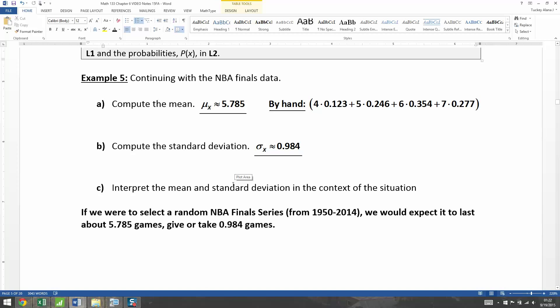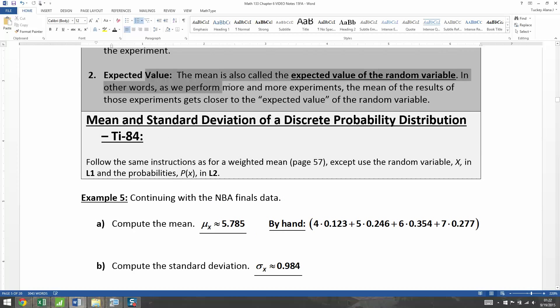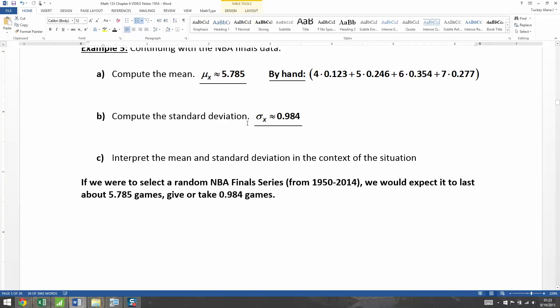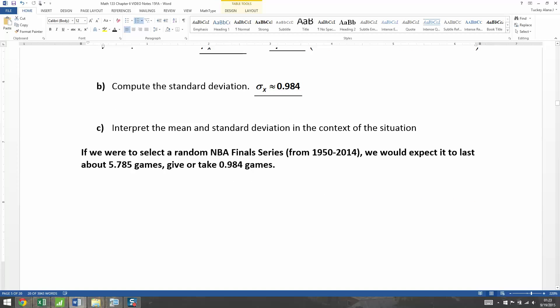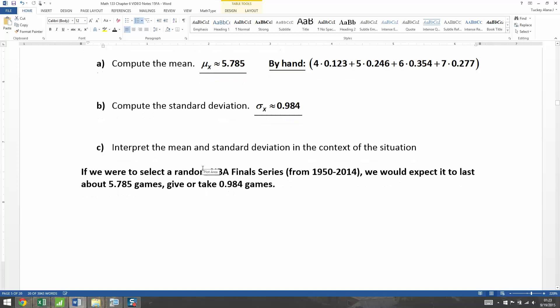Now, this mean that we found here, 5.785, has a whole other meaning, this expected value meaning that we need to expand upon further. And we'll do that in the next video.